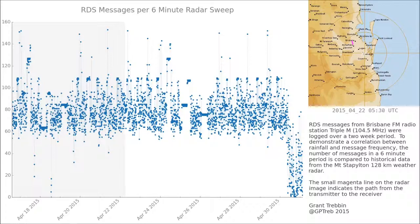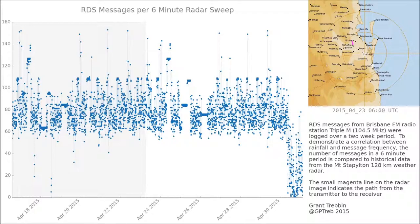I don't know if you can see it, but in the top left quadrant of the radar over on the right there, there's a small purple line. That's the path from the receiver to the transmitter. So any rainfall that passes over that path should affect the signal.